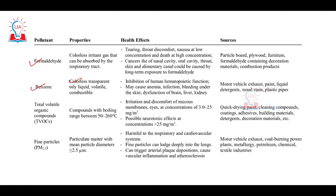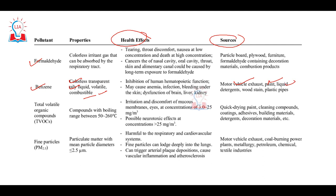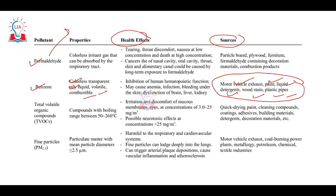Benzene is a colorless, transparent liquid that is volatile. Its health effects are significant, and its sources include motor vehicle exhausts, paint, liquid detergent, wood stain, and plastic pipes. Formaldehyde and benzene are both volatile organic compounds. You can pause this video and go through the slide for details on fine particles and VOCs like formaldehyde and benzene.